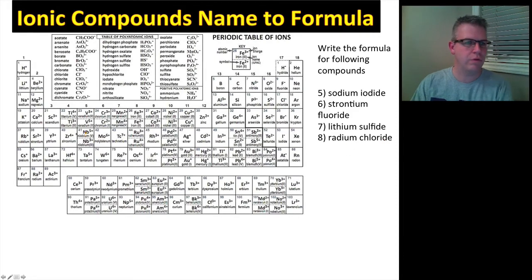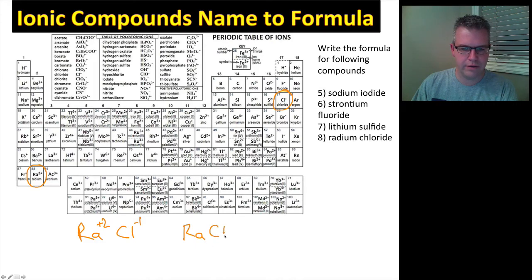Our last one is radium chloride. Where are we going to find radium? Radium is right here. Okay, radium chloride. Ra positive 2. Chloride is Cl negative 1. Okay, let's cross over those digits again. RaCl2.